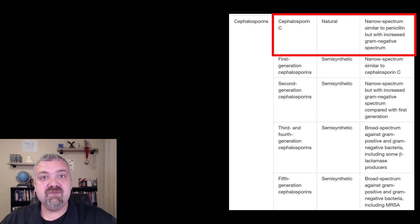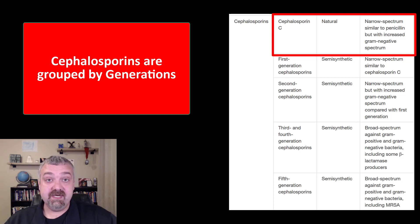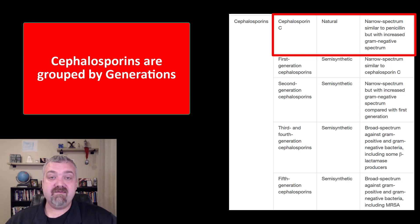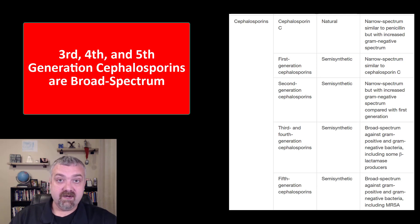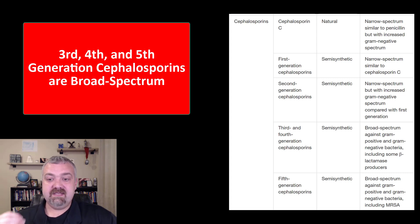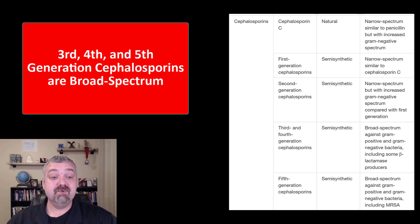One major difference between cephalosporin and other antibiotics is that they're actually put into groups by generation. There are a lot of different options, and they group them by these generations. As you travel down the page, the early-generation cephalosporins were more narrow spectrum, and they become broader and broader spectrum. The fourth-generation cephalosporins are going to be the broadest spectrum of the first groups.